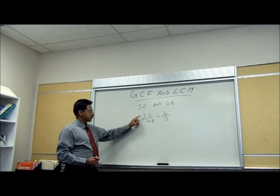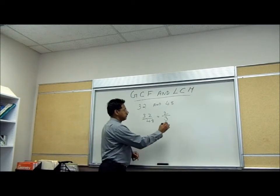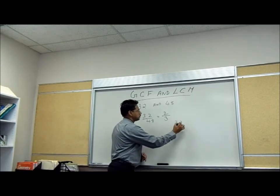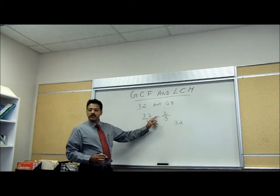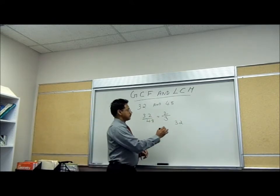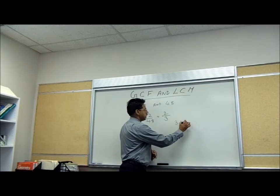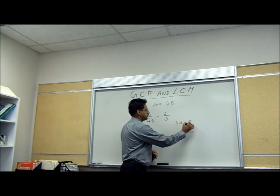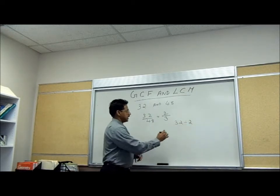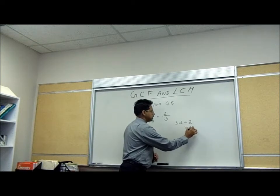For the original fraction, the numerator is 32 and the numerator of the reduced form is 2. So, just divide. That gives 16.